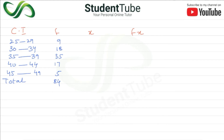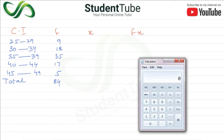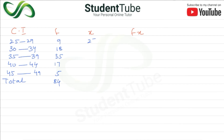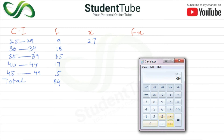Now x is the midpoint. Midpoint is calculated by adding both class limits and dividing by 2. For 25–29: (25+29)/2 = 27. For 30–34: (30+34)/2 = 32.